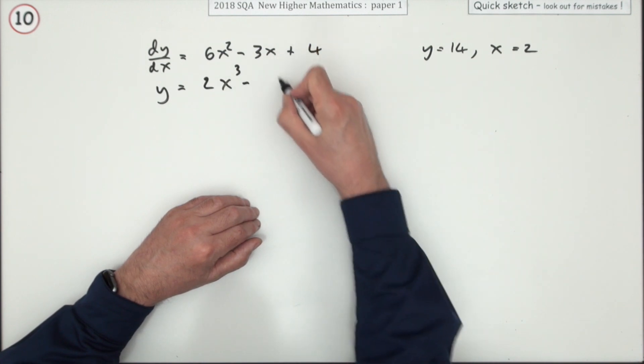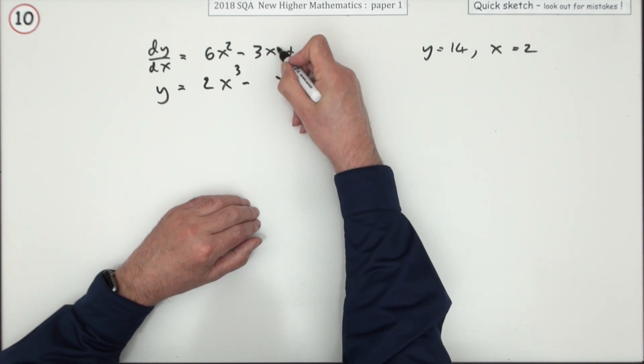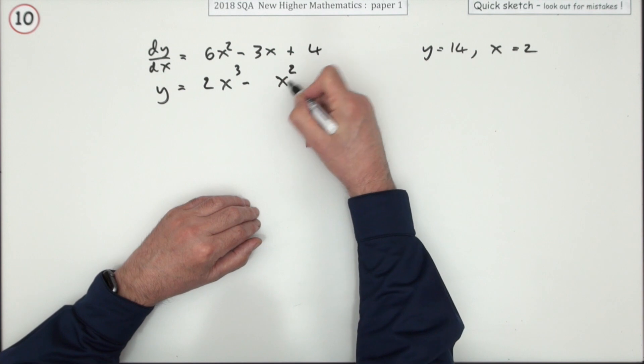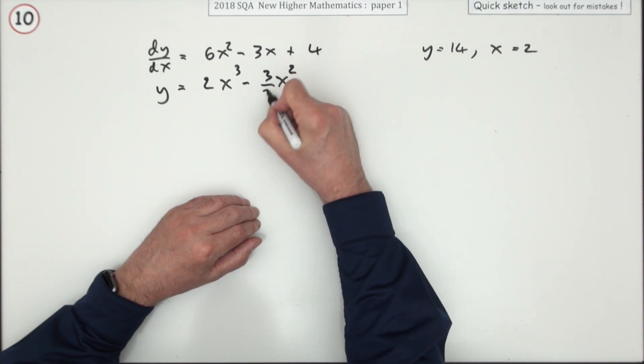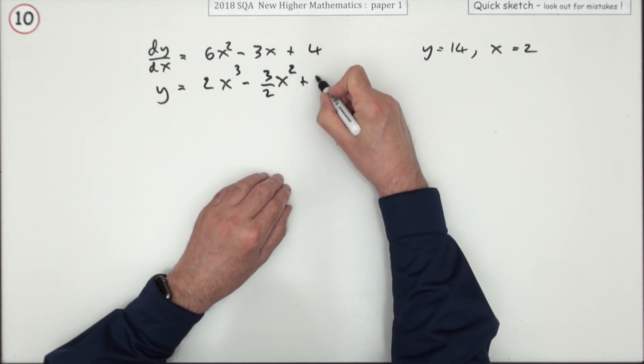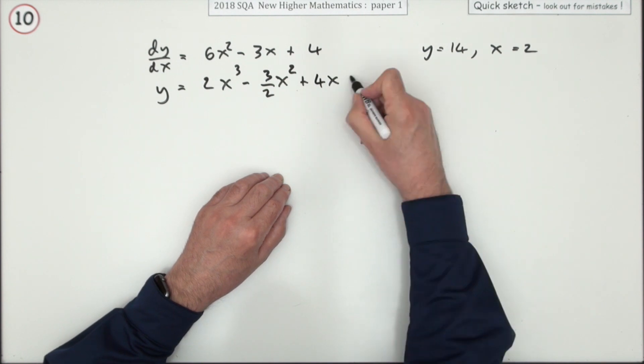The x term is power one, add one to the power up to two, divide by two. Four goes back to the linear term, four x. But there could have been some constant at the end.